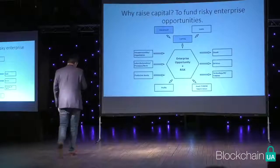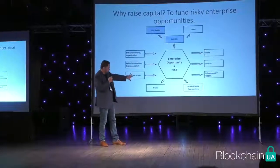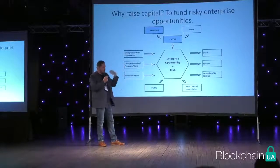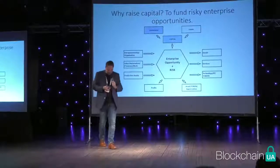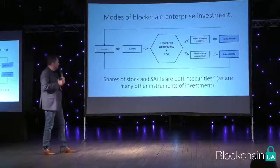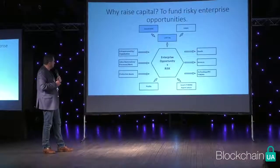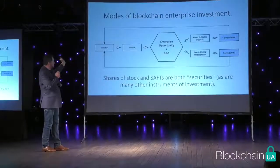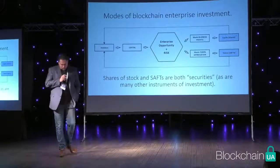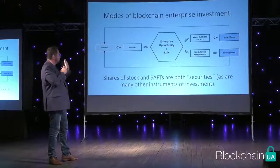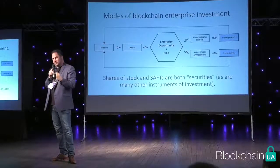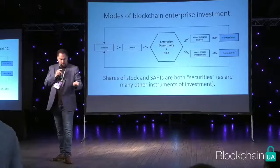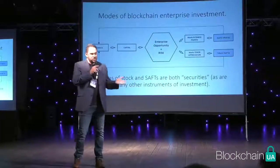Usually what they want back is a share of the profits of the business — that's what makes it an investment. They want to get back more than they put in. In the traditional world, there are two ways to invest: either investing directly in the company — equity, getting stocks or shares — or lending money to the company, which is debt. Equity and debt are the two traditional modes of investment. With equity you get a share of the company, so if it's sold or gives dividends, you make money. Debt means you lend a certain amount and at some point want it back with interest — basically rent payments on money.